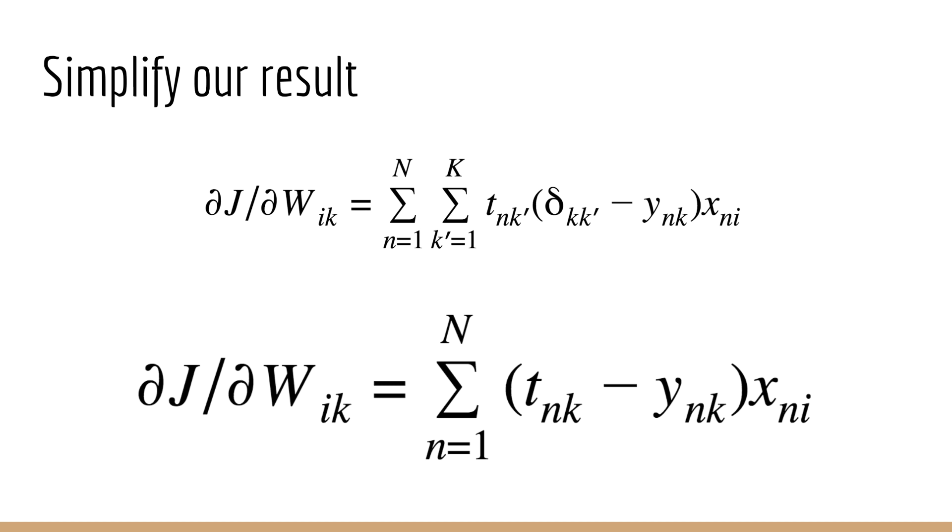As you can see, the variable n, which loops through the samples, is a dummy variable, and it exists only inside the summation. i and k, on the other hand, are not dummy variables, and they both exist inside and outside the summation. As mentioned earlier, they refer to the input node and the output node of our logistic regression model.